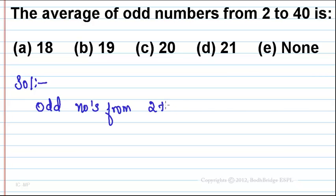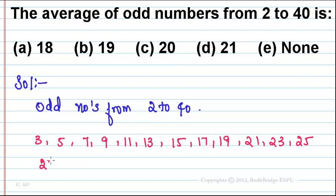First we want to know the odd numbers from 2 to 40, so let's list down the odd numbers from 2 to 40. It is 3, 5, 7, 9, 11, 13, 15, 17, 19, 21, 23, 25, 27, 29, 31, 33, 35, 37, and 39. So these are the odd numbers from 2 to 40.